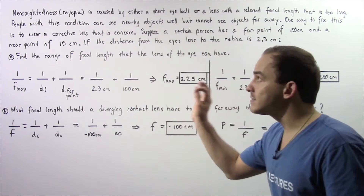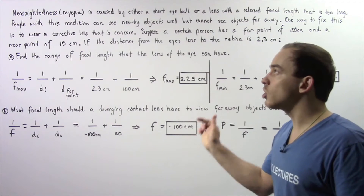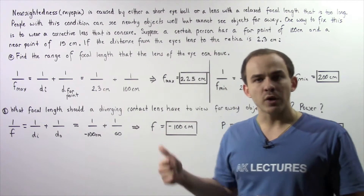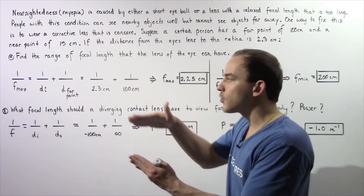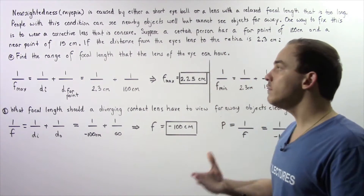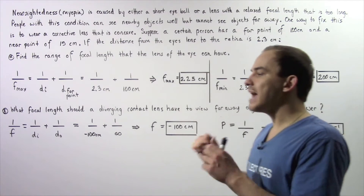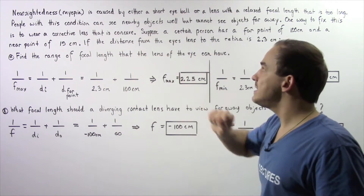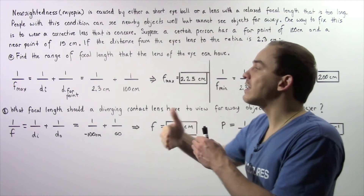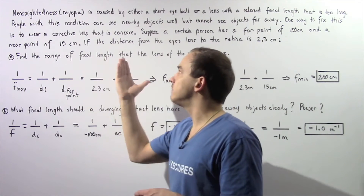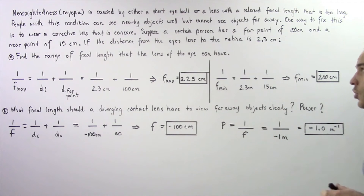To fix such a condition, the person can use a corrective lens that is concave or diverging. A diverging corrective lens will diverge our point of convergence right onto the retina, and the person will be able to focus on objects far away. People with this condition can see objects very well that are close by, but cannot see objects that are far away. One way to fix this is by using a corrective lens that is concave or diverging.